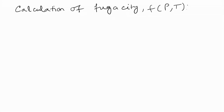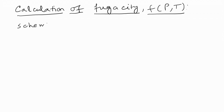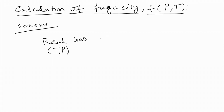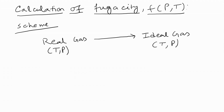Fugacity is defined as a function of pressure and temperature. We will consider the following scheme: a real gas at constant temperature and pressure goes to an ideal gas at the same temperature and pressure, and the change in free energy for this path we call delta G bar 1.